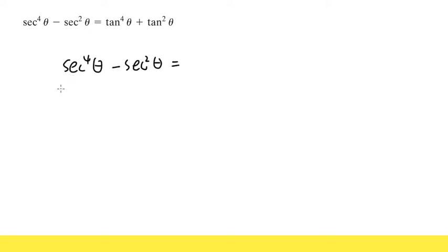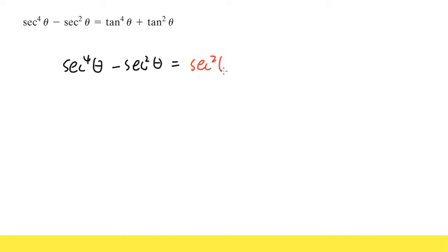We know a couple of identities for secant — for example, secant theta is the same as 1 over cosine theta, but that's not the one I want to use here. In this expression, we have two terms: one is secant to the fourth power and the other is secant to the second power. We notice that both terms are at least to the second power, so just like a typical algebra expression, we can factor — factor out secant squared theta.